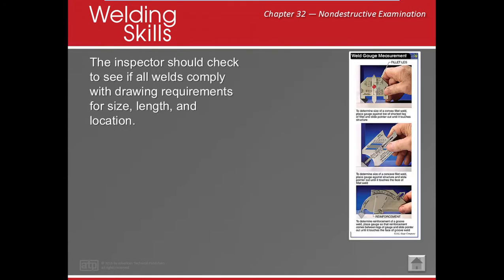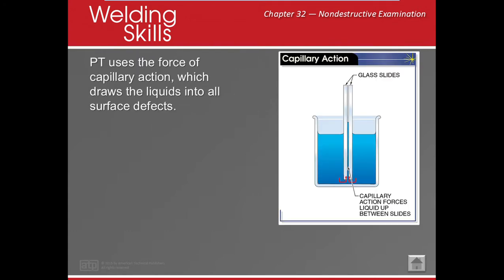With visual examination, we can use different tools to examine our work. The first is a depth gauge. We can also look at convexity of fillet welds and groove welds, and check for excessive reinforcement. I'll bring in some of the tools for you to check out to make it easier to determine what we're looking at. The second type of non-destructive examination is PT — dye penetrant.